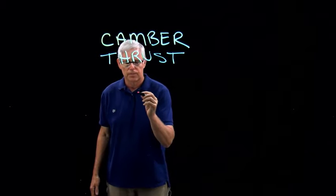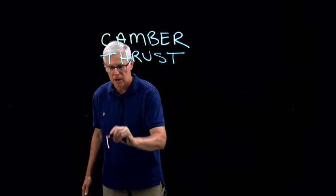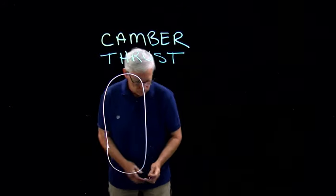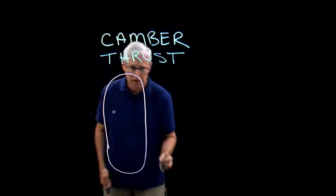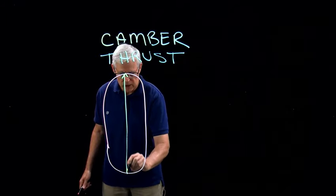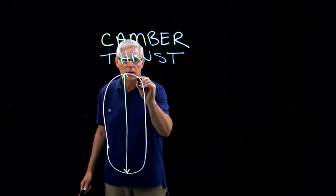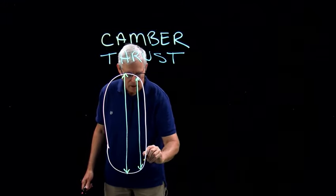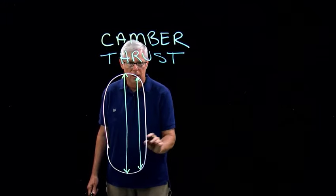Here's why that works. Here is a depiction of a motorcycle tire. You'll notice that the diameter of the center of the tire is larger than the diameter of the tire at the edges.